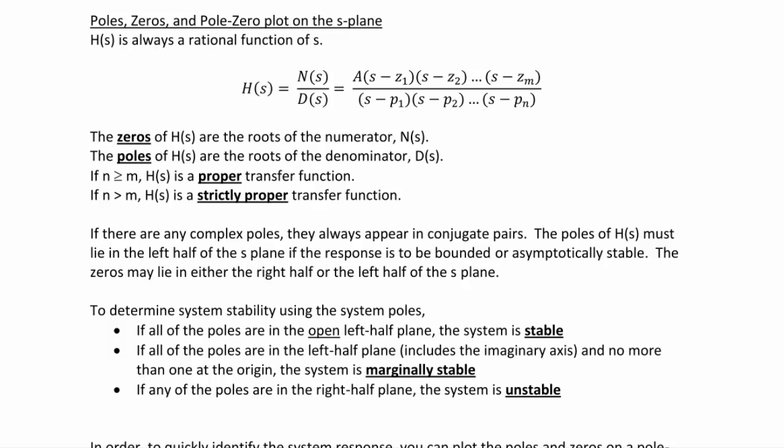If there are any complex poles, they always appear in conjugate pairs. The poles of H(s) must lie in the left half plane of the S-plane if the response is to be bounded or asymptotically stable. The zeros may lie in either the right or left half of the S-plane. To determine system stability using the poles: if all poles are in the open left half plane, the system is stable; if poles are in the left half plane including the imaginary axis with no more than one at the origin, the system is marginally stable; if any poles are in the right half plane, the system is unstable.